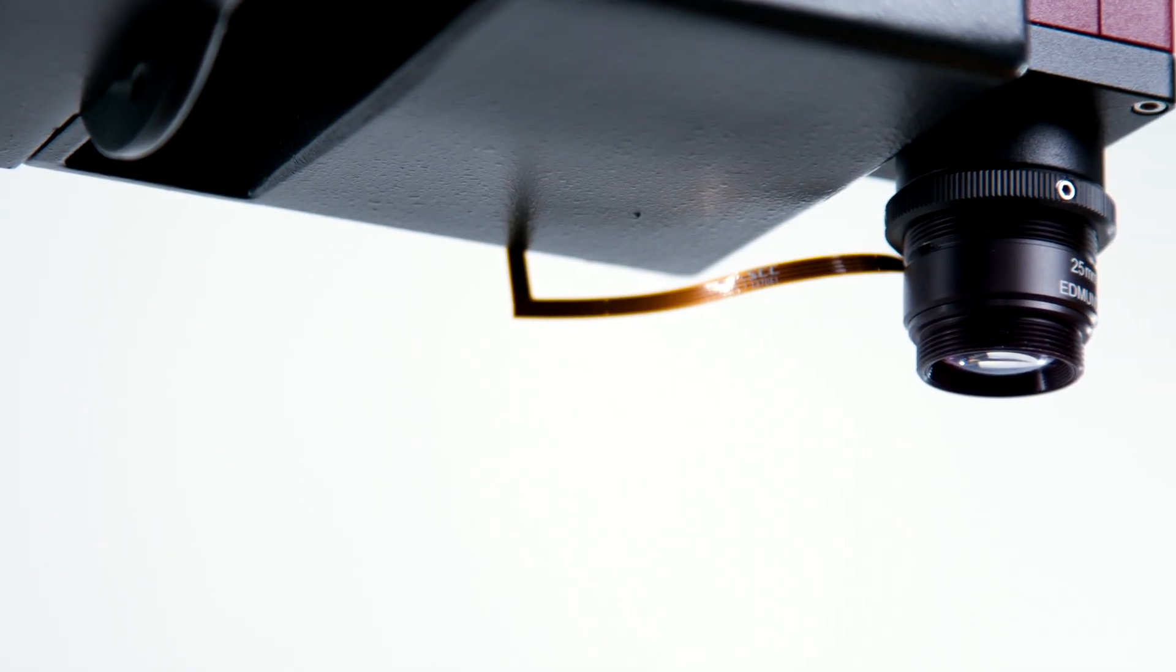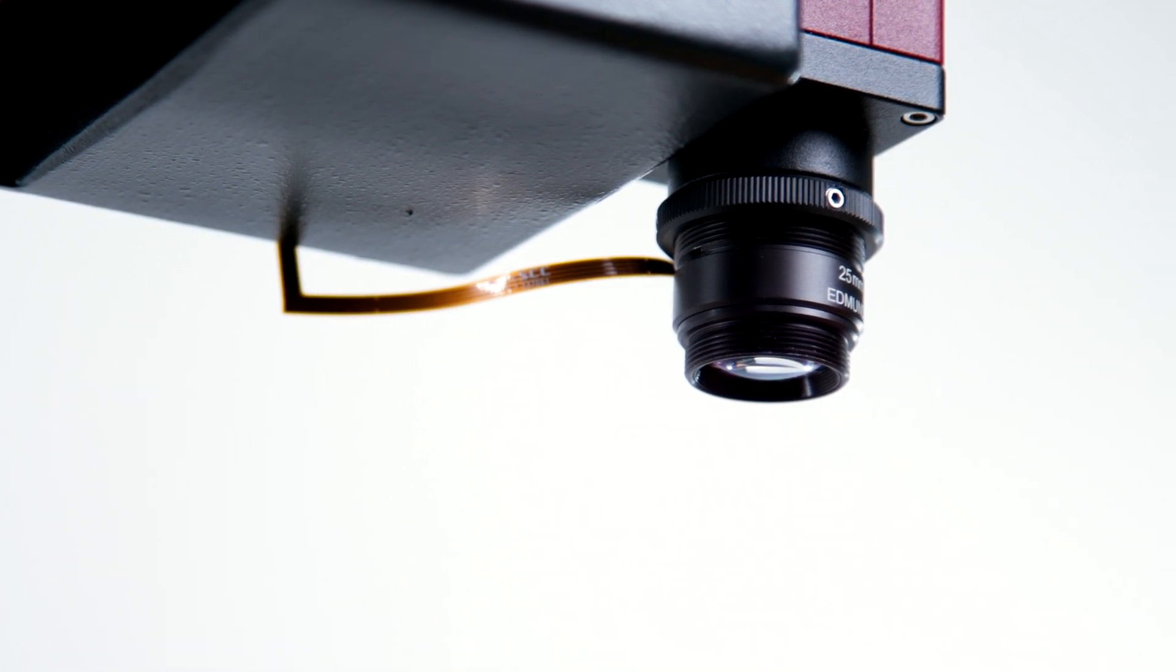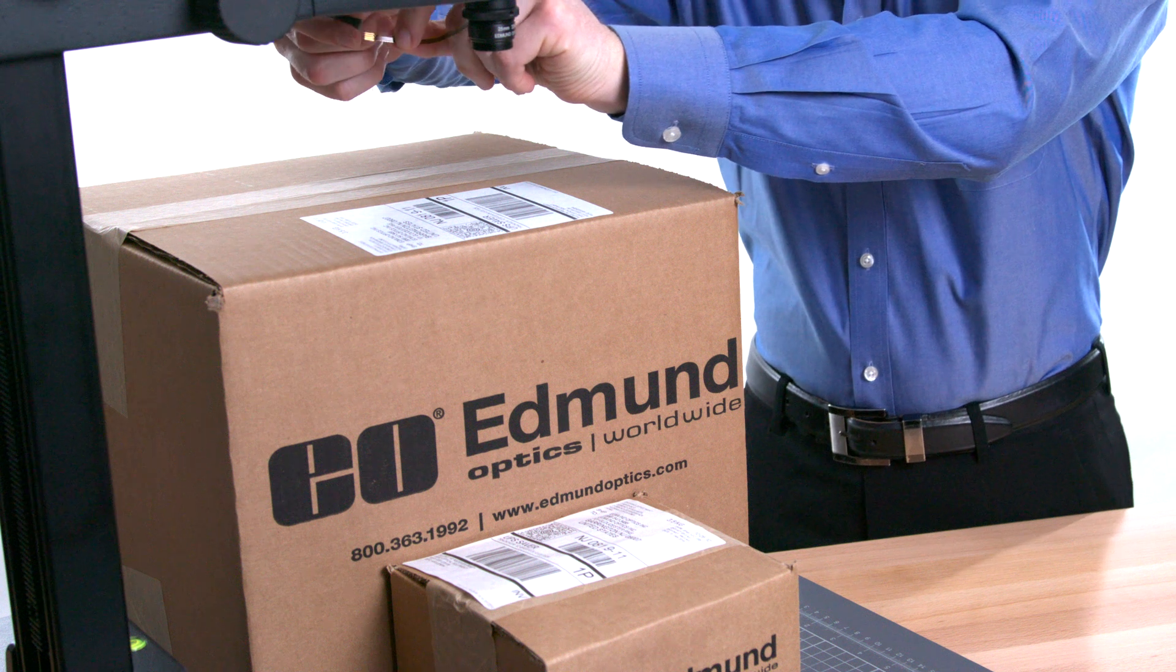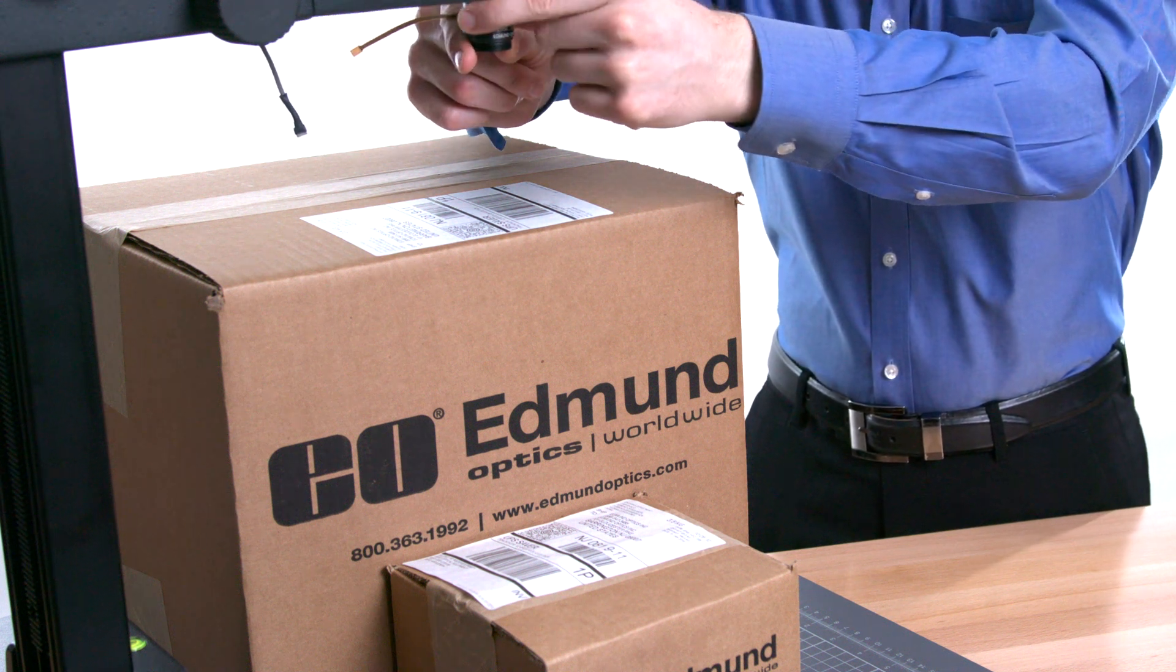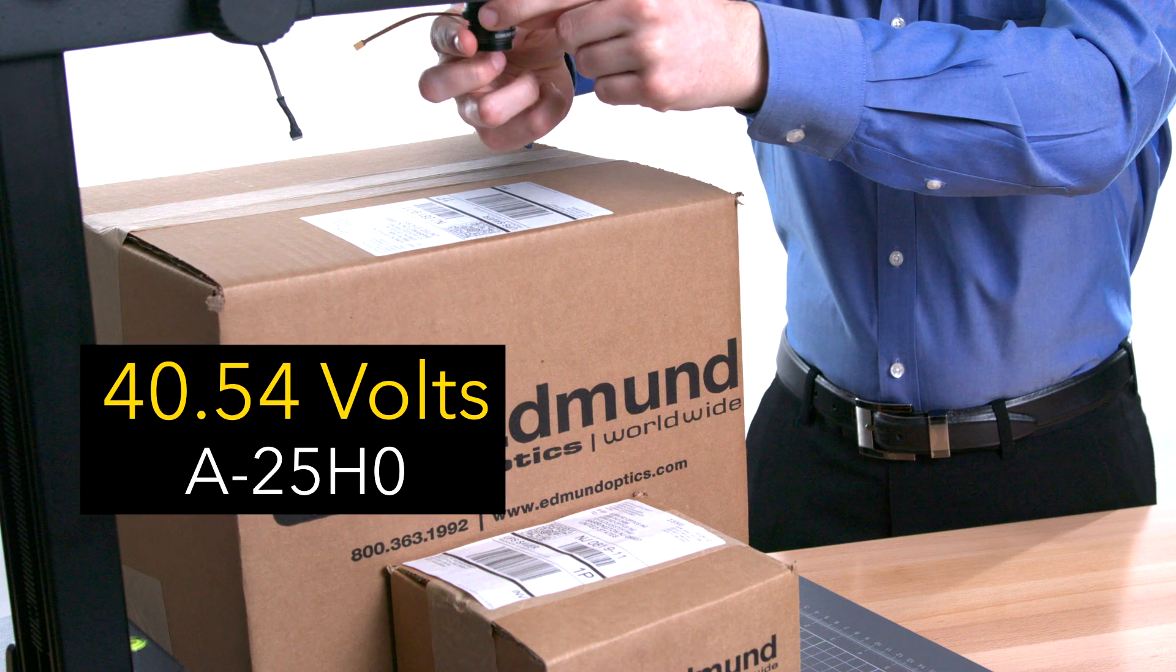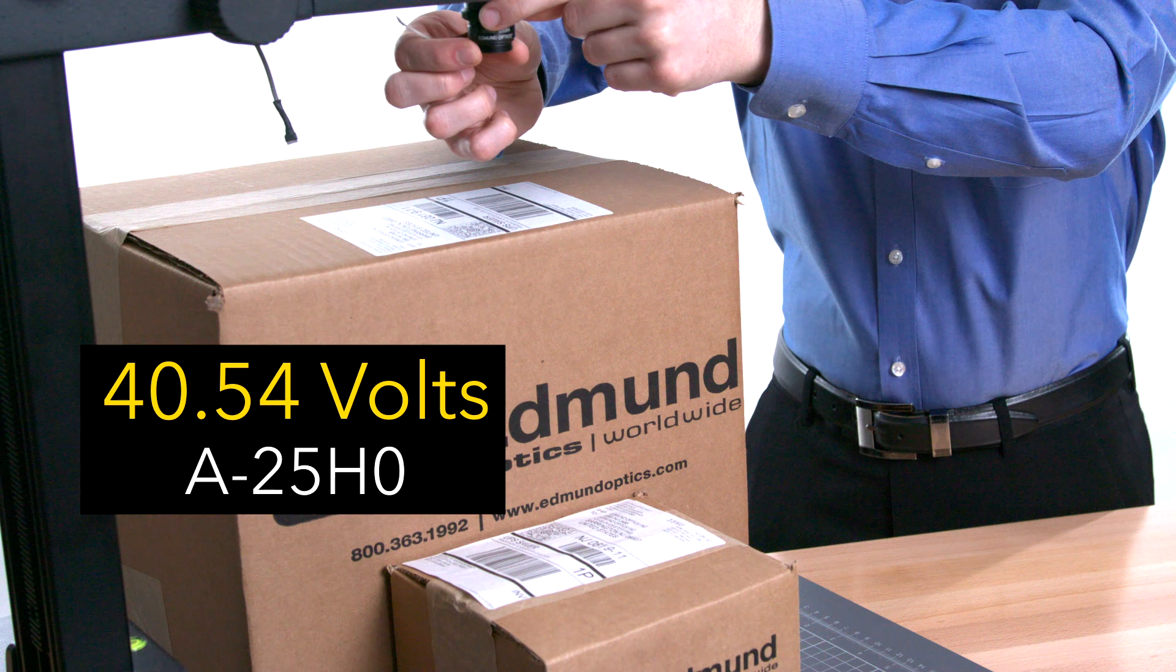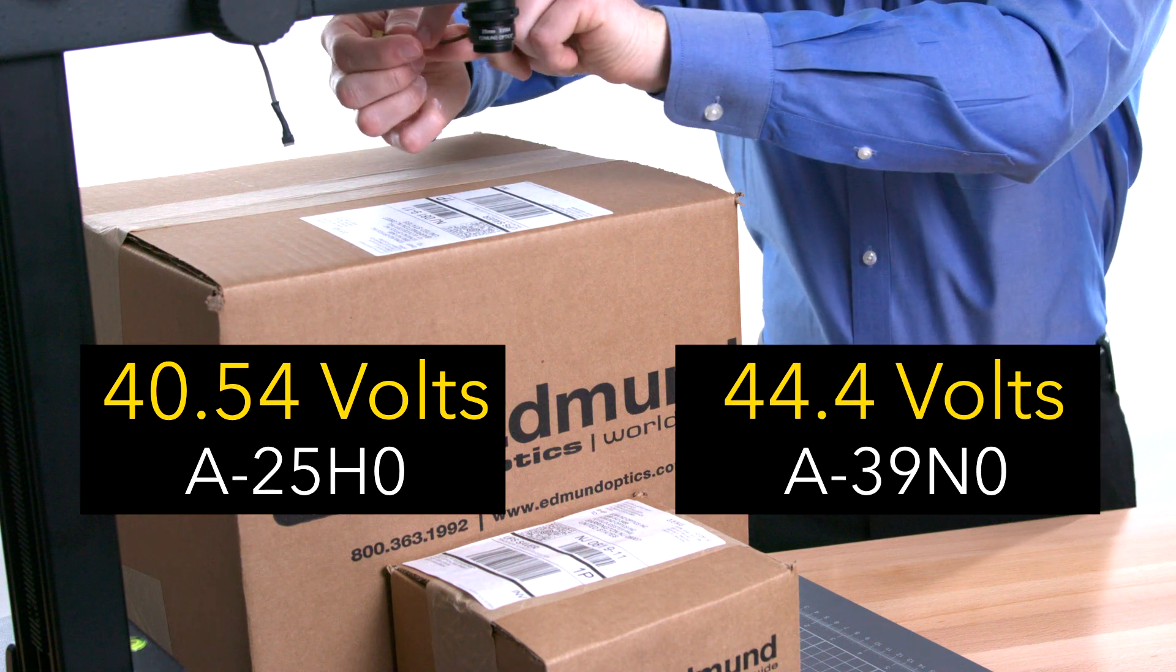While the electronic focus of the liquid lens can be used at any position, it is a best practice to first adjust the lock nut position for optimal performance. First, set the liquid lens to zero optical power. This is 40.54 volts for the A25-H0 liquid lens and 44.4 volts for the A39-N0 lens.